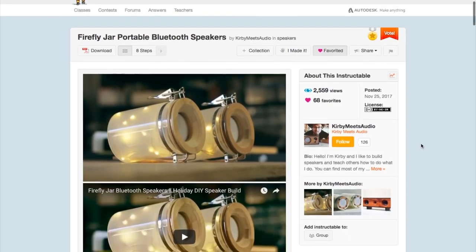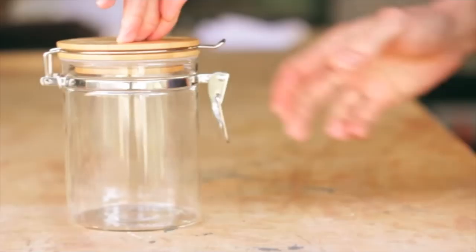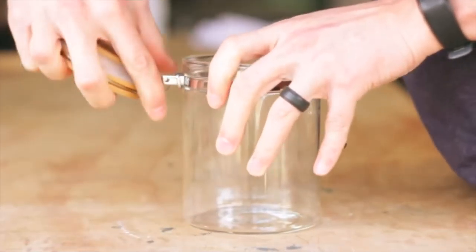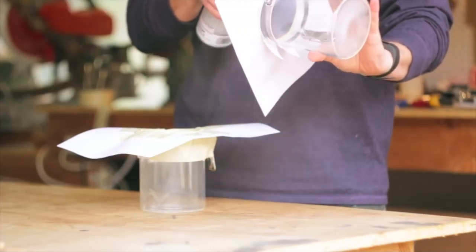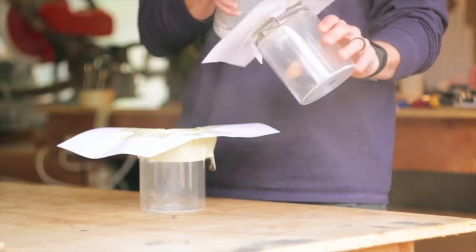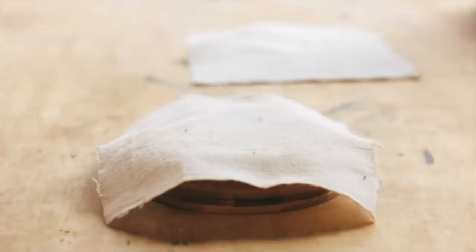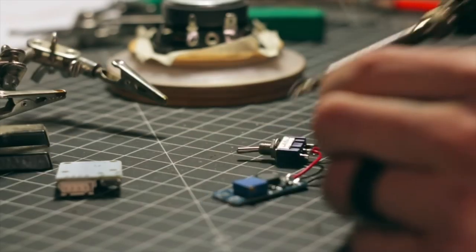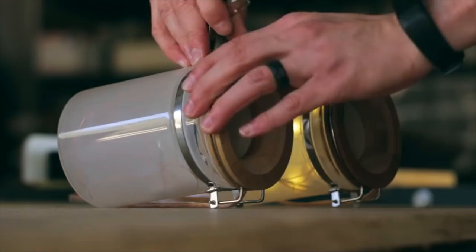I also really like this Firefly Jar Portable Speaker project by Kirby Meets Audio. This is a set of stereo Bluetooth speakers built into a pair of sealed glass jars with little string lights inside. The project walks you through frosting the glass, modifying the lid to fit the speakers, placing the grill cloth, wiring the Bluetooth board and amplifier, attaching the rechargeable battery, and placing the lights.